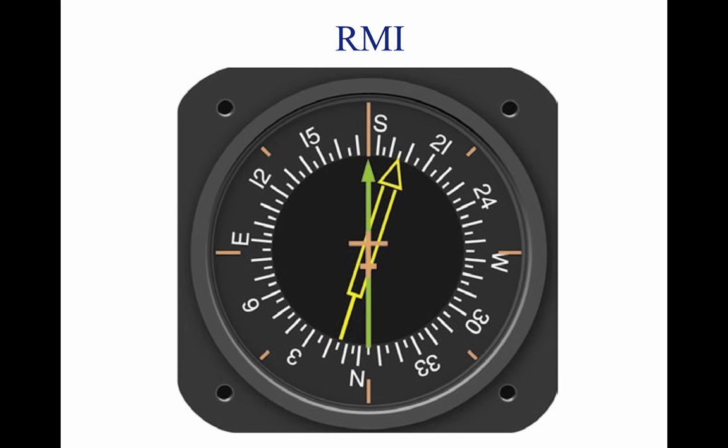As instrument panels become more crowded and the pilot's available scan time is reduced by a heavier flight deck workload, instrument manufacturers have worked toward combining instruments. One good example of this is the RMI. The compass card is driven by signals from the flux valve, and the two pointers are driven by an automatic direction finder (ADF) and a very high frequency (VHF) omnidirectional radio range (VOR).